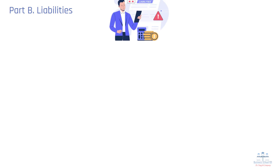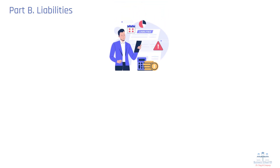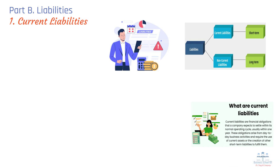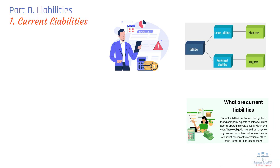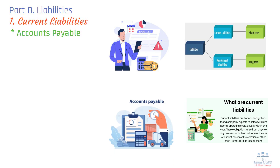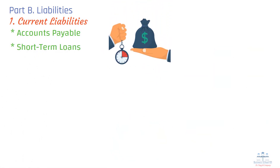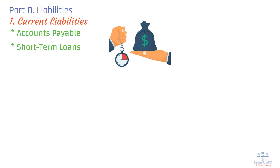Part B: Liabilities. Liabilities represent a company's financial obligations — the debts and responsibilities the company must repay in the future. Similar to assets, liabilities can be classified into two categories based on their repayment timeline. Type 1: Current liabilities. Current liabilities are obligations that must be paid within one year, essential to track because they affect a company's short-term financial health and liquidity. Examples include accounts payable — money the company owes to suppliers for goods or services received but not yet paid — and short-term loans or credit lines due within a year, used to cover operational expenses.